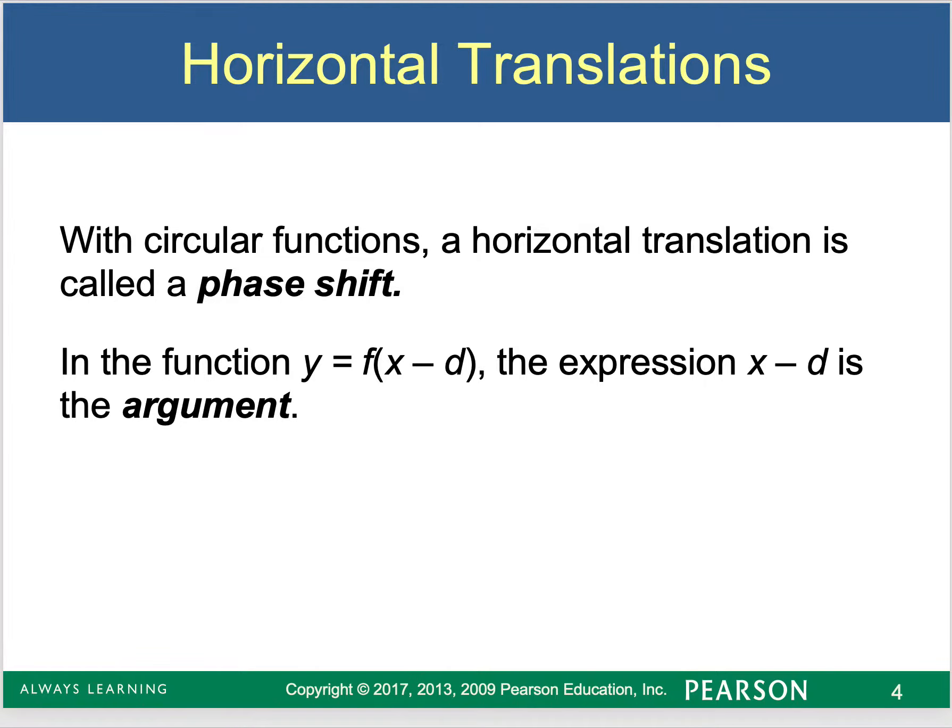With these circular functions, the horizontal translation is called a phase shift. And that's because it cycles through the same values over and over again. So when we shift it, it's called a phase shift because it's shifting every single point on the graph, but it's still maintaining that cyclical nature.